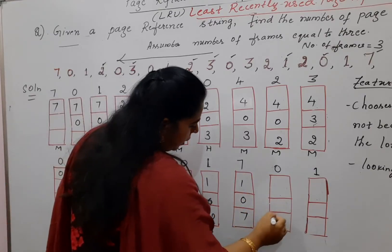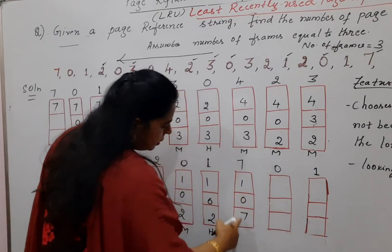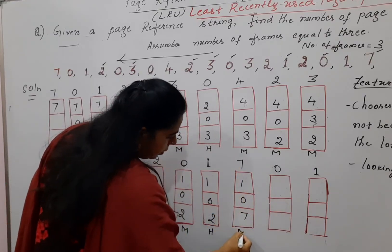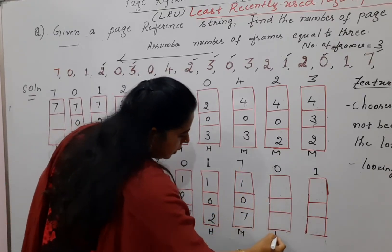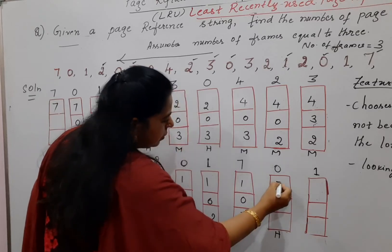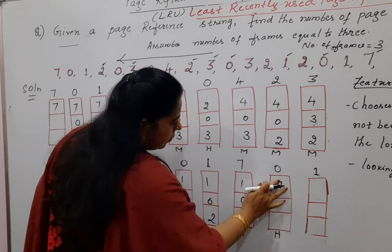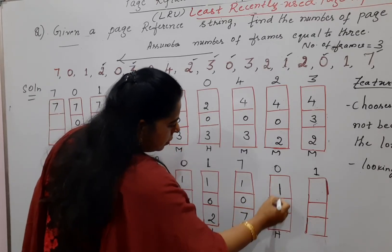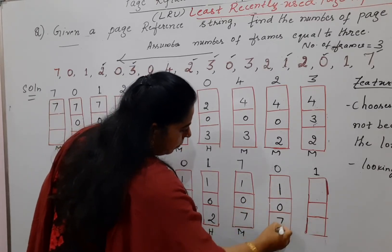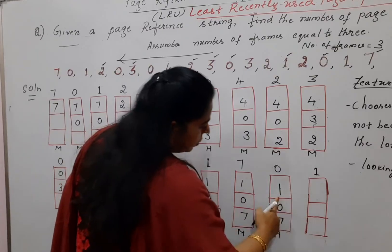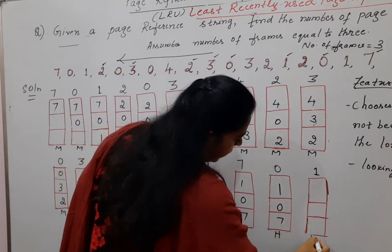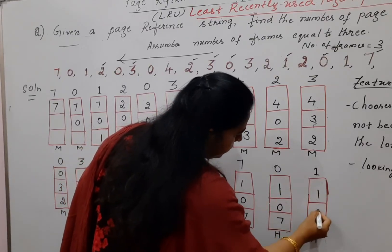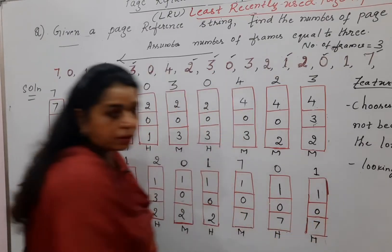Next is zero — already there, it is a hit. Next is one — already there in frames one, zero, and seven, so it is a hit.